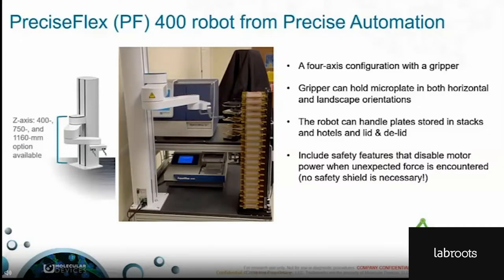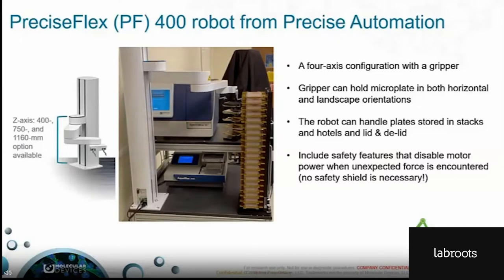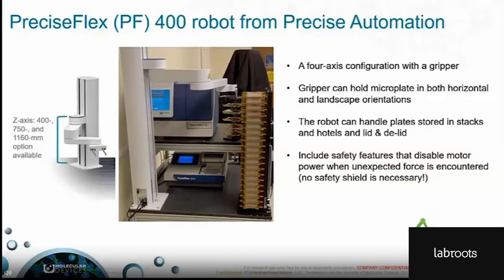Overall, if increased throughput and multi-component work cells are required, then the PF400 is the robotic arm you will want to perform the tasks normally reserved for the scientist's own hands. In this slide you're seeing a video example of how the PF400 moves labware throughout a work cell.